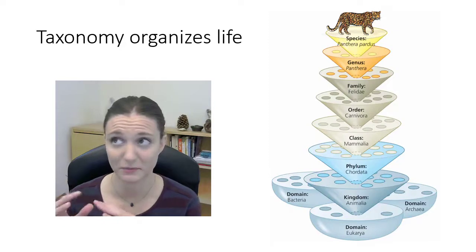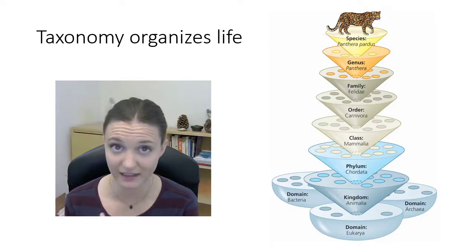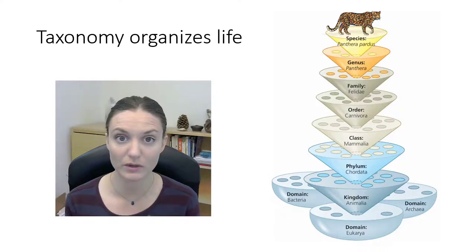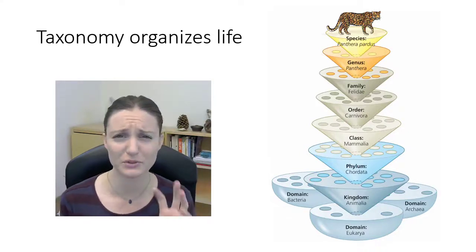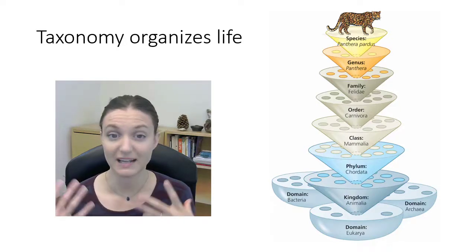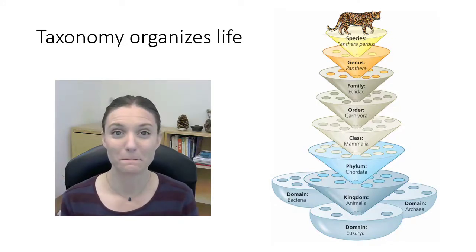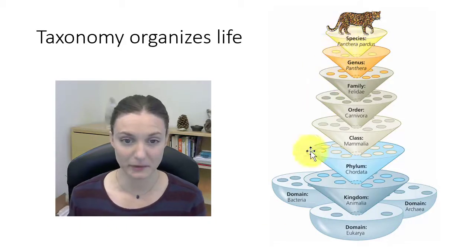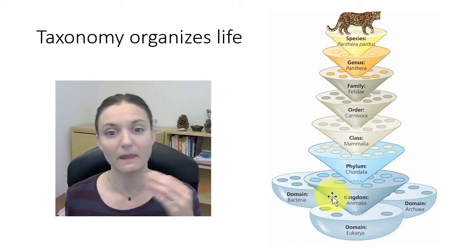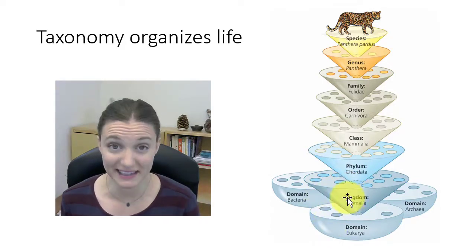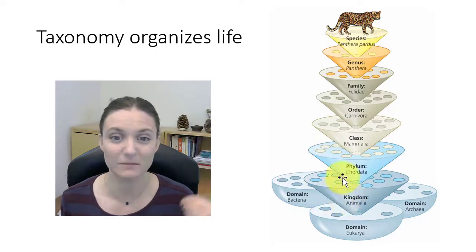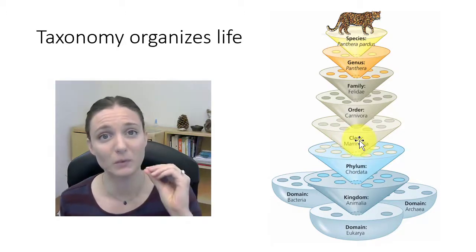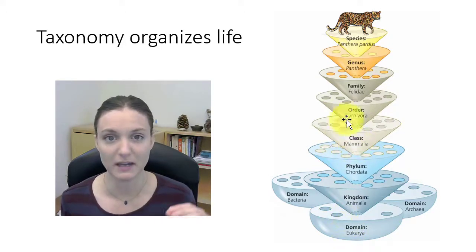Before Darwin, and before Linnaeus, Aristotle was also classifying life. Linnaeus described the process of classifying organisms based on their shared characteristics, using physical characteristics to determine relationships in a hierarchical classification system where we get more and more specific as we move between the levels of taxonomy. The largest grouping is domain, then kingdom, then phyla, then classes, and we get more and more exclusionary as we move from domain all the way down to species.